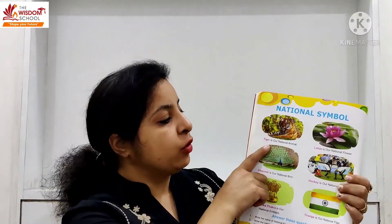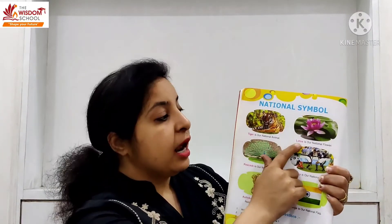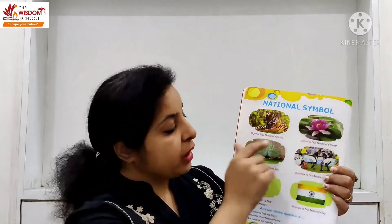Joh humara topic hai, national symbols. National symbol mein dekho — ye kya hai? Joh humara rashtriya hai, sab kuch. Tiger is our national animal. Lotus is our national flower. Ashoka chakra is our national emblem. Tiranga is our national flag. Which is our national animal? Tiger. Which is our national flower? Lotus. Which is our national game? Hockey. Which is our national bird? Peacock. Which is our national flag? Tiranga. And which is our national emblem? Ashoka chakra.